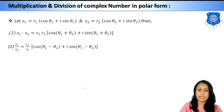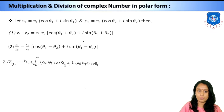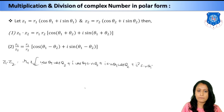To multiply z₁ and z₂, write r₁ and r₂ together, then expand the two brackets. Taking cos θ₁ first and multiplying: cos θ₁ cos θ₂ + i cos θ₁ sin θ₂. Then taking i sin θ₁ and multiplying: i sin θ₁ cos θ₂ + i² sin θ₁ sin θ₂. Since i² = −1, the real part is cos θ₁ cos θ₂ − sin θ₁ sin θ₂.